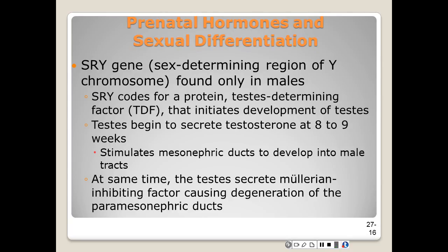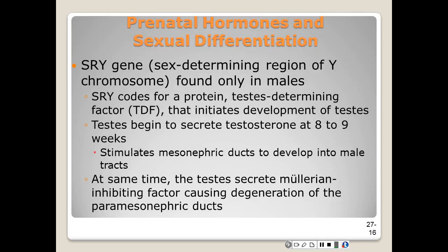The testosterone stimulates the mesonephric duct to develop into the system of male reproductive ducts. By this time the testes also secretes a hormone — the MIF factor — which causes atrophy of the paramesonephric ducts. An adult male retains a tiny V-shaped vestige of the paramesonephric ducts in the area of the prostatic urethra. The level of estrogen is always high during pregnancy; the development of a female therefore results from the absence of androgens, not the absence of estrogen.